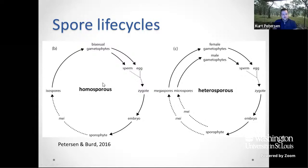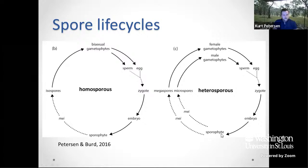As a refresher on life cycles: in a homosporous lycophyte life cycle, bisexual isospores produce bisexual gametophytes which then produce sperm and egg on the same gametophyte. They either breed with themselves or nearby gametophytes, producing zygote, embryo, and sporophyte. In heterospory, the differentiation is that we now have megaspores and microspores, which produce the female and male gametophytes separately. The sperm and egg meet from neighboring spores or via dispersal into another population. It should be noted that the diploid sporophyte is the dominant stage in lycophytes and ferns, while the haploid gametophyte is dominant in bryophytes.